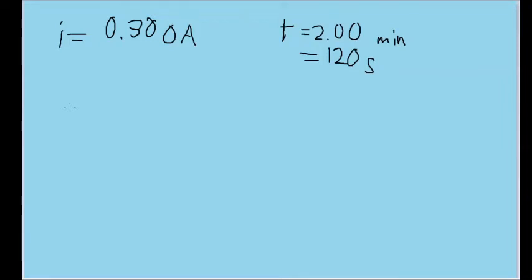This problem describes the fibrillation of the heart and how harmful it can be to have an electric current passing through your chest for a long amount of time. Specifically, we're told to imagine that a current of 0.3 amperes is passing through a human body for 2 minutes, or 120 seconds. During that time, how many electrons pass through the chest?